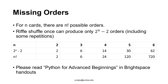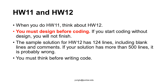How many times do you need to shuffle? This is a complex mathematics problem beyond the scope of ECE 264. You can find additional information about card shuffling in the handout on Brightspace. These two assignments really need thinking and design before coding. When you do homework 11, be aware of homework 12's requirements. You absolutely must design before writing code — if you start coding without a plan, you will not finish. The sample solution for homework 12 has 124 lines including blank lines and comments; if your solution has more than 500 lines, it is probably wrong.